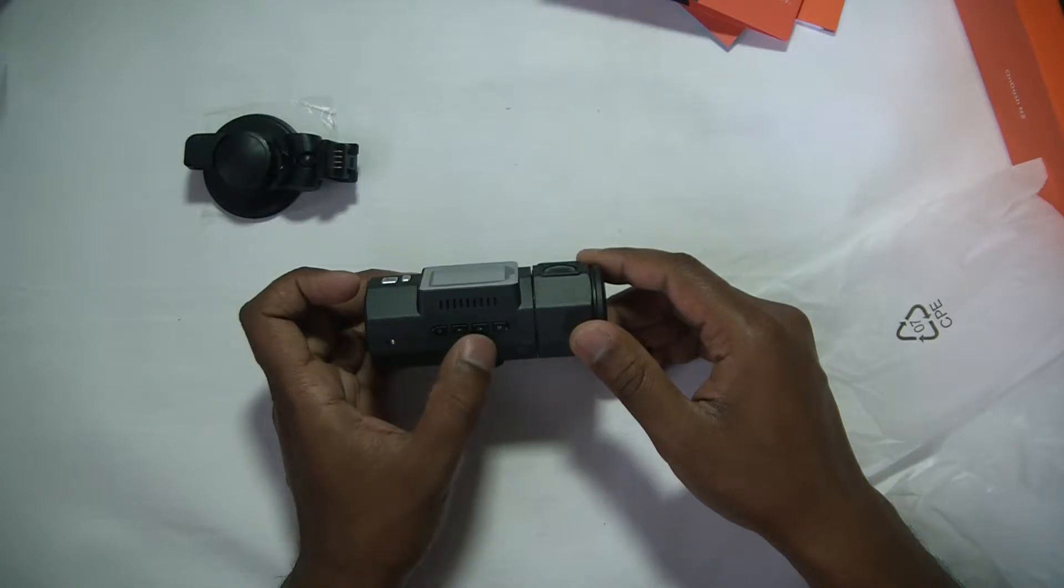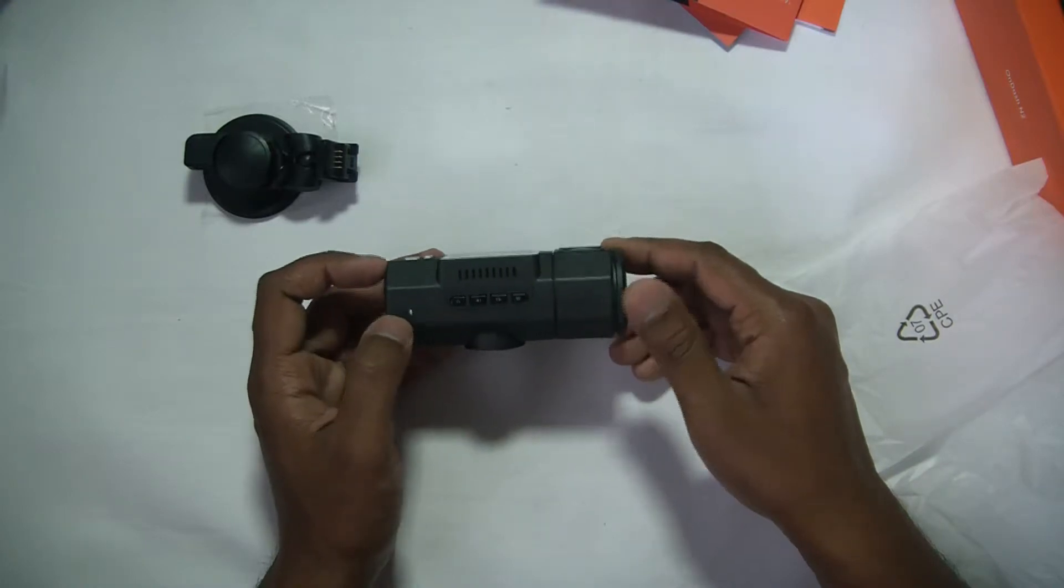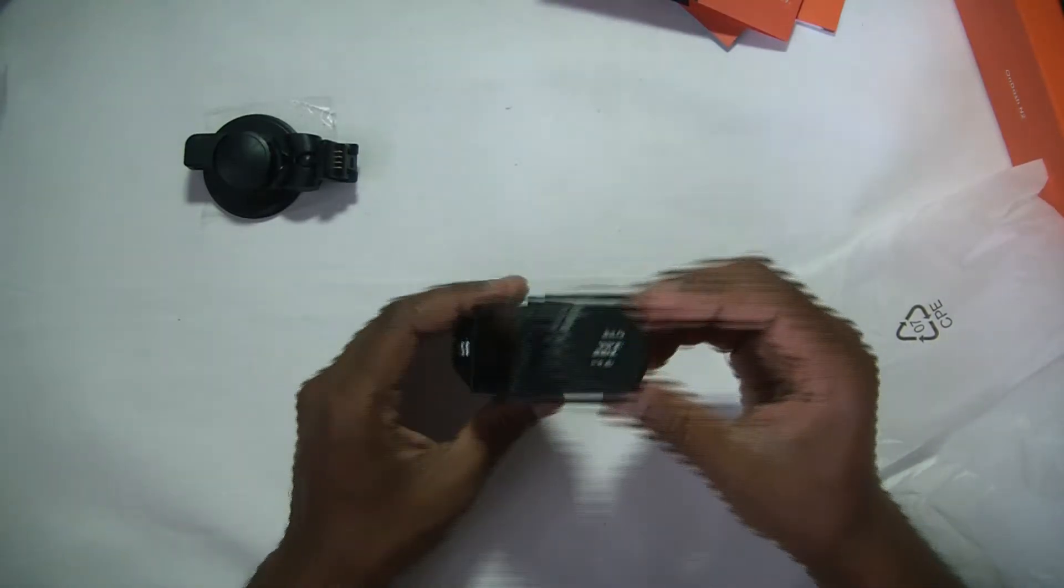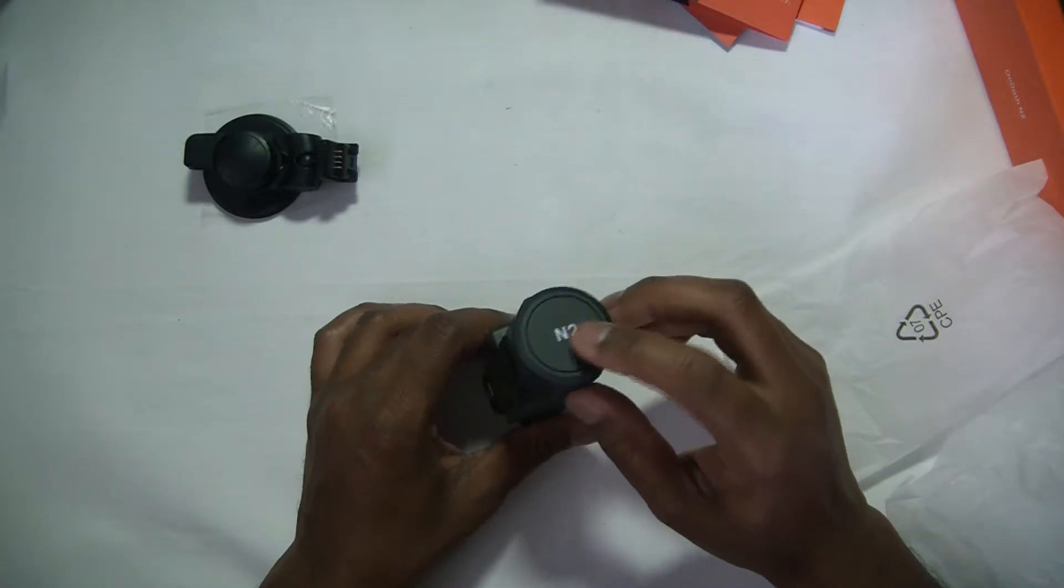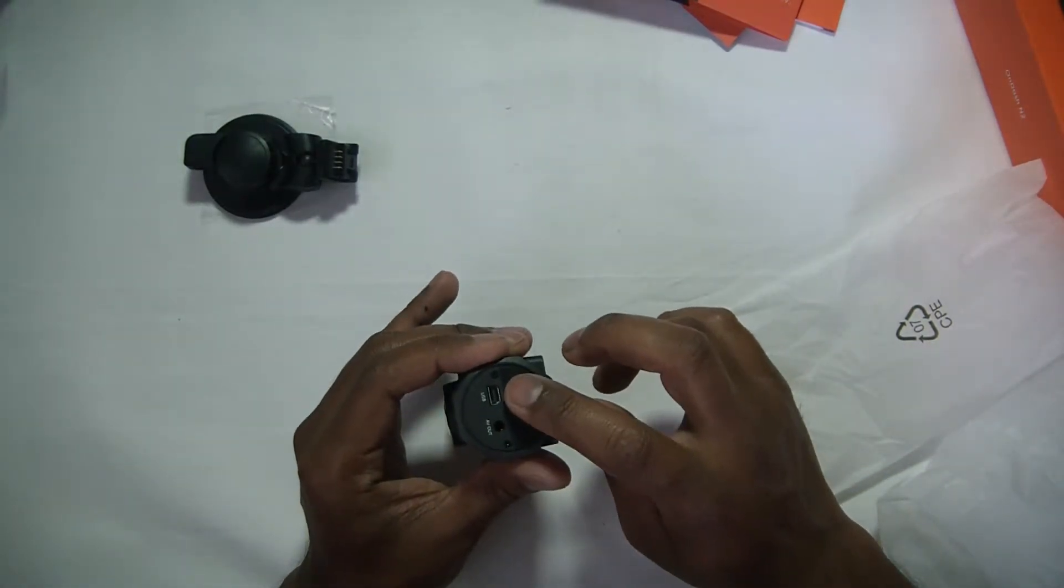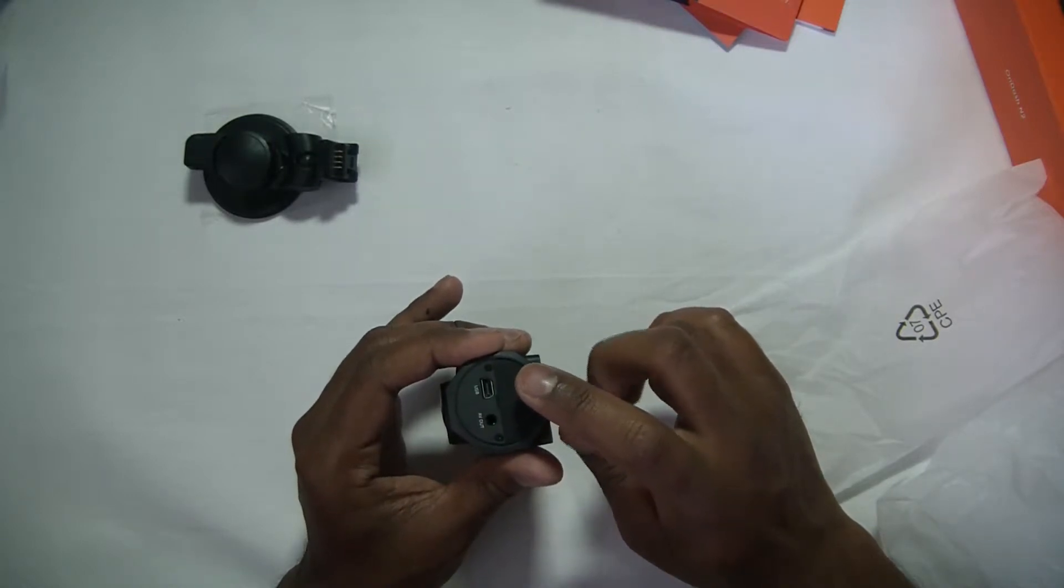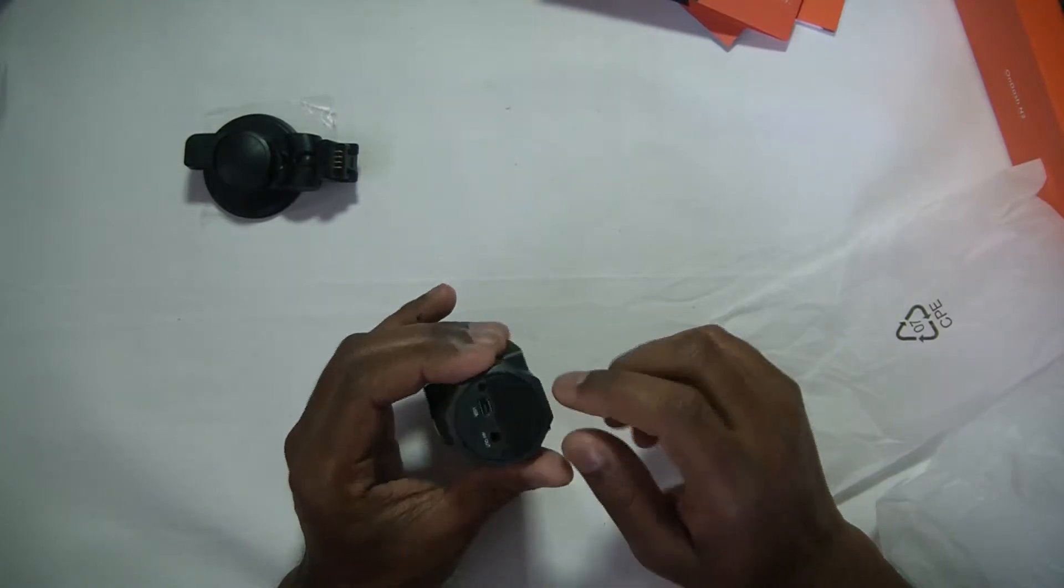We have a few buttons here. I guess this is power, backward and forward. I'm not sure what that is. We have a mic port here. We have an N2 logo here on this side. Here we have the USB input, power slash data. We have an AV out.